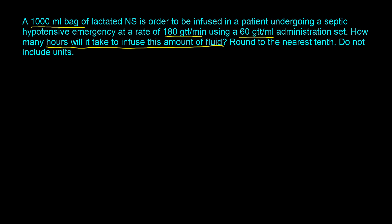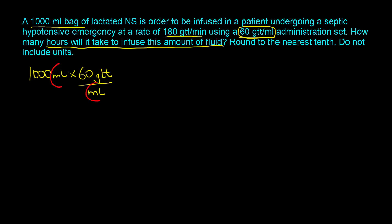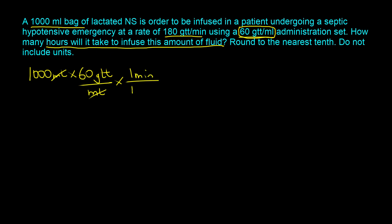We start with the volume of the bag: 1000 milliliters. We need to get rid of the milliliter term, so we need a quantity with units per ml. The calibration factor gives us that: 60 drops per milliliter. The milliliter terms cancel out and we are now in drops. To get rid of the drops and arrive at time, we use the IV flow rate — but we flip it, multiplying by one minute per 180 drops, since every minute you have 180 drops.